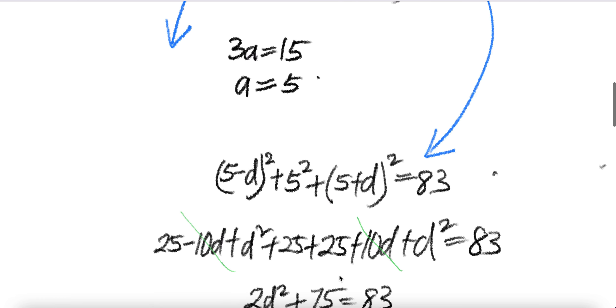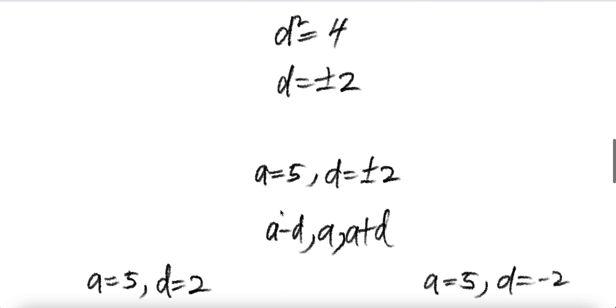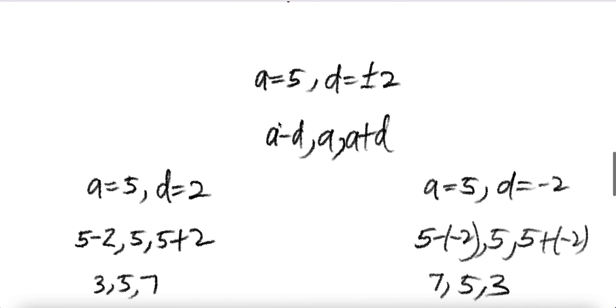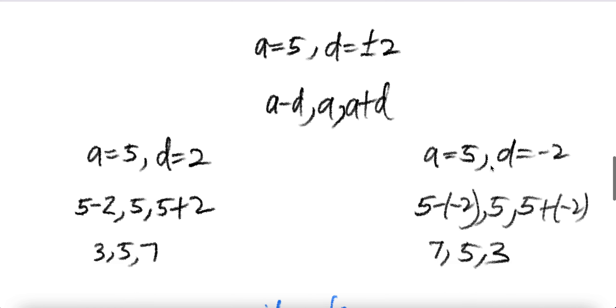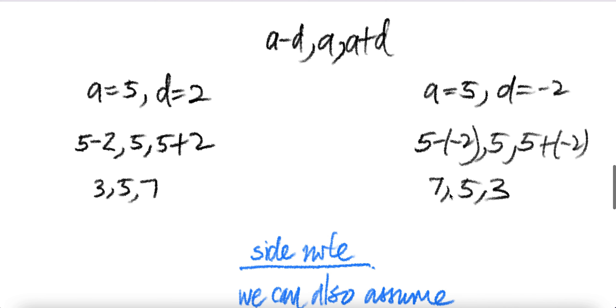So now we know A equal 5 and D is plus minus 2. Then this was our original formulation. Now plug A equal 5 and D equal 2. And then A equal 5, D equal 2. And then you see that the answer you get is 3, 5, 7. And then here you get 7, 5, 3. And then if you solve it the other way around, they are identical.